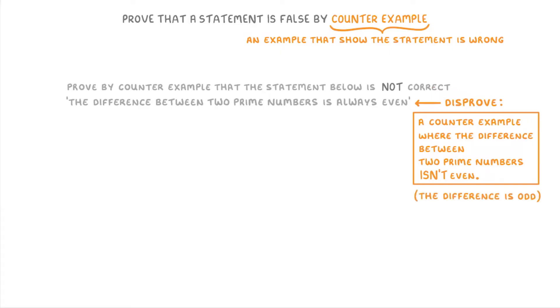One way to do this would be to start picking random prime numbers and see if the difference between them is odd or even. For example, we could try things like the prime numbers 3 and 7, which have a difference of 4, 11 and 17, which have a difference of 6...